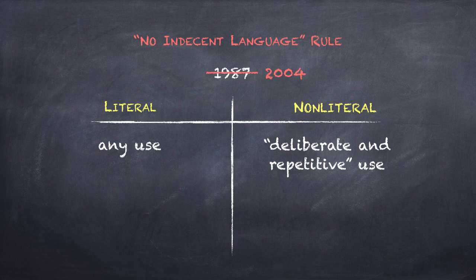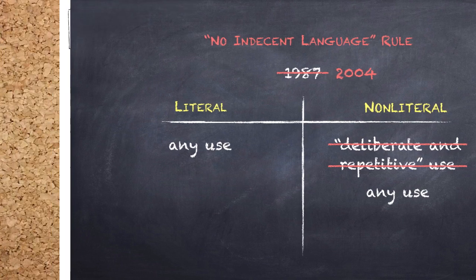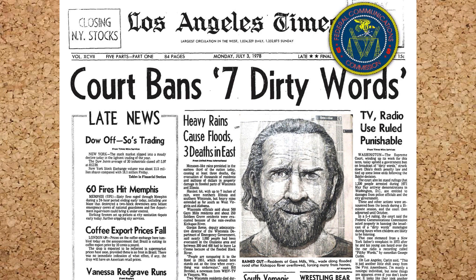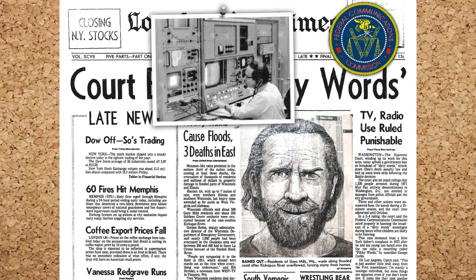In 2004, the FCC announced it was changing the rule. The rule as amended made no allowance for non-literal use of indecent language. The FCC's main reason was that over the years since the rule first came into effect, bleeping technology had improved so much that it was not too burdensome to require broadcasters to bleep out all indecent language — not merely the literal and deliberate or repetitive non-literal indecency.